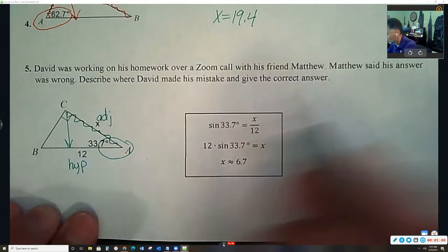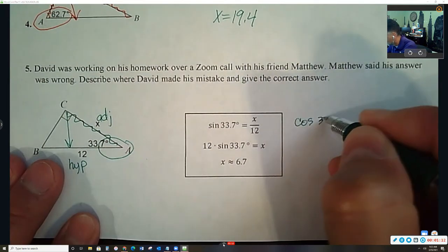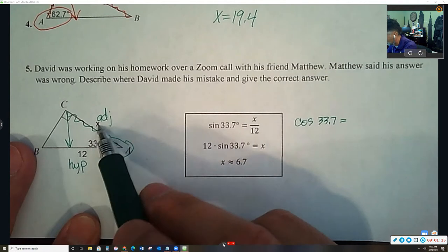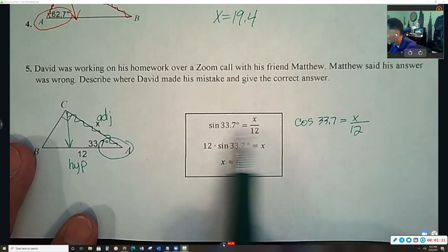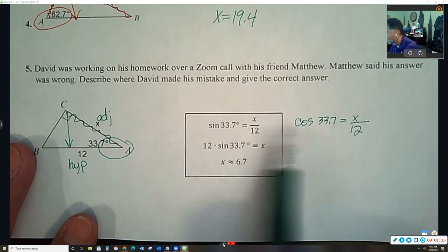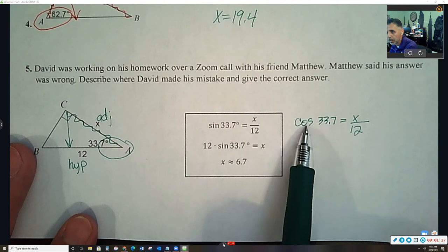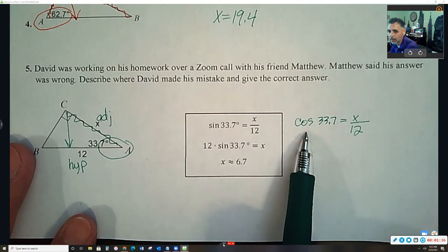So it would look like this. Cosine of 33.7 is equal to the length of the adjacent leg divided by the hypotenuse. And right away you see what they did wrong. What David did wrong. David grabbed the wrong trig function. He used sine when he should have used cosine.